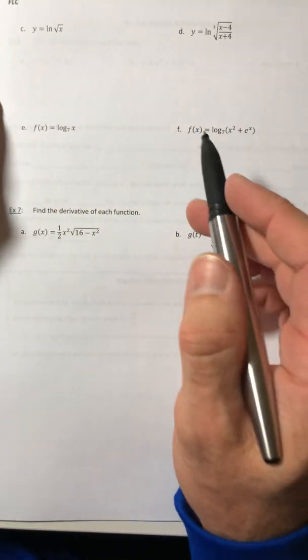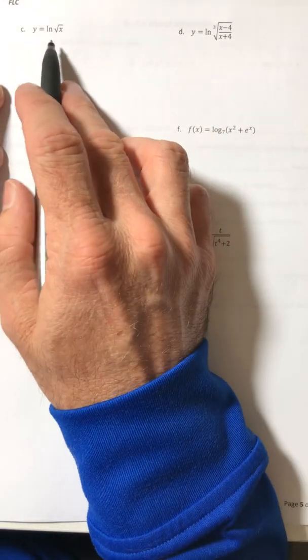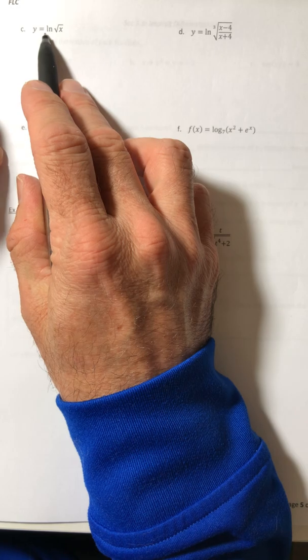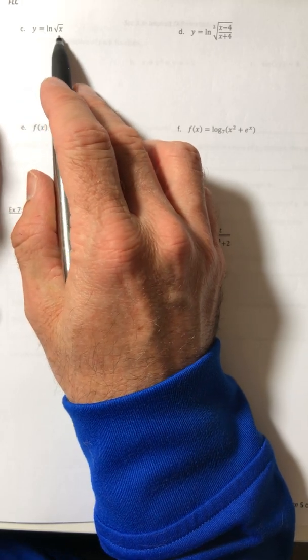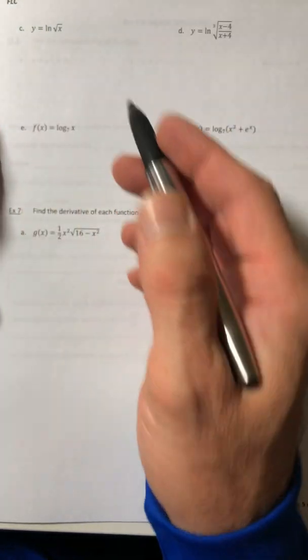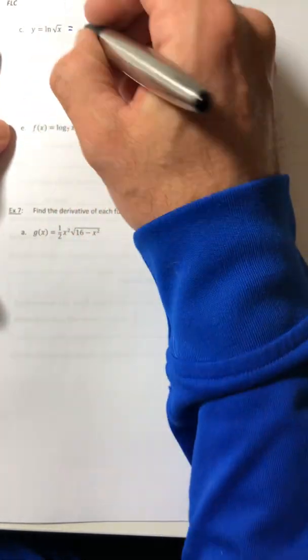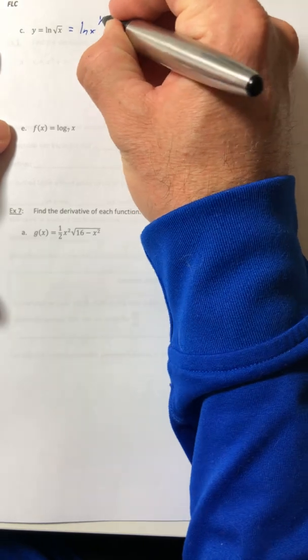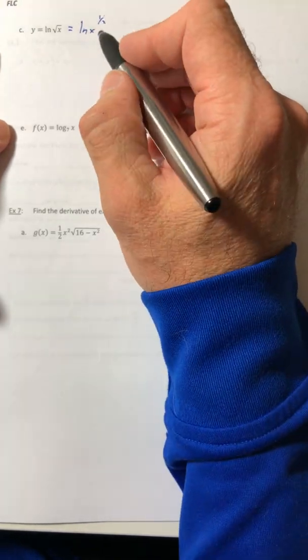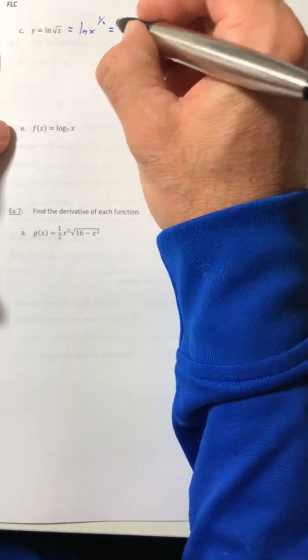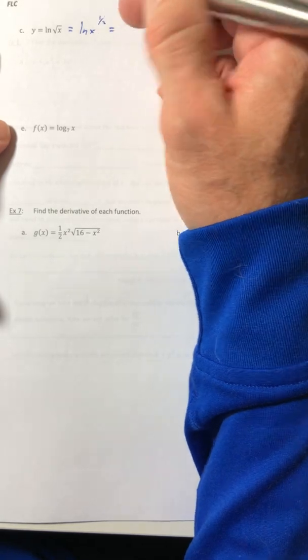Logs are kind of interesting because a lot of times they can be some really complex looking function, but there's ways around it to make it not so complex. It's like the square root of x. That's just ln of x to the half. Well, with logarithms, any exponent you can pull down to the front.